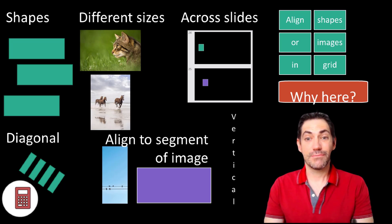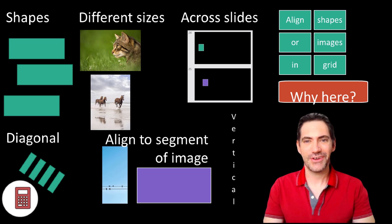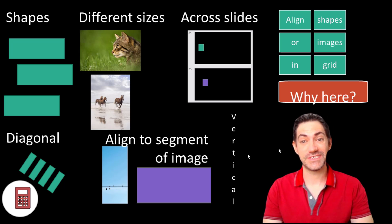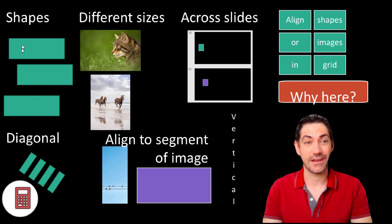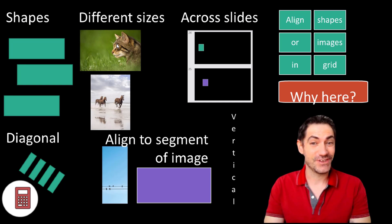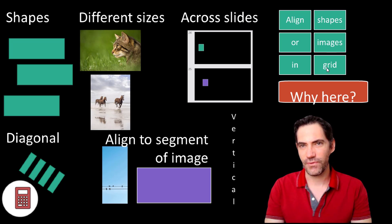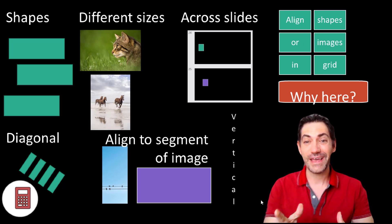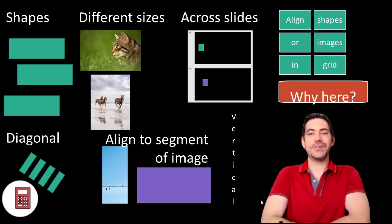PowerPoint alignment is something that most people know how to do in one or two ways, but there are so many other ways for different scenarios. For example, getting all these shapes to distribute and align exactly, or when things are different sizes like images or shapes. Aligning across slides can be really tricky, as can aligning in a grid formation. I'm going to go through a lot of these things and whistle through it because I've got a lot to cover.